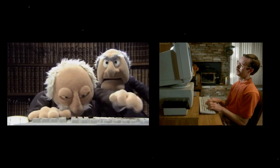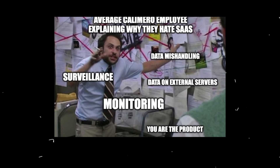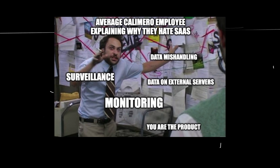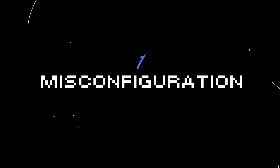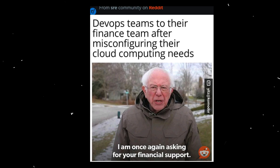This alarming event wasn't a result of hacking. Instead, it boiled down to sheer incompetence. Google's mishandling of the situation led to the complete erasure of a financial institution's data. They attributed the fiasco to a misconfiguration — a series of unique and unfortunate errors that hadn't occurred before.